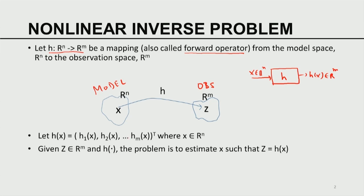H has m components: H1, H2, ... Hm transpose, where X is in Rn. Given Z in Rm and given the nature of the function H, our problem is to be able to estimate X such that Z equals H of X. That is the problem — the non-linear version of the linear least square problem.